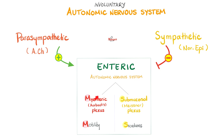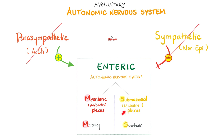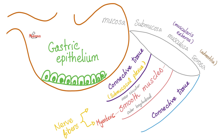Here is the enteric nervous system — it's automatic. We have myenteric for motility and submucosal for secretion. On top of that, you can stimulate it or inhibit it. But even without outside nerves — if you remove the parasympathetic and the sympathetic — your gut will still be able to move and secrete, because it's autonomic. It has its own intrinsic activity. It is strong, opinionated, and does not depend on outsiders.